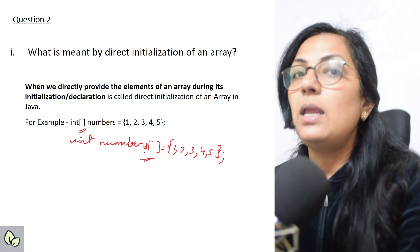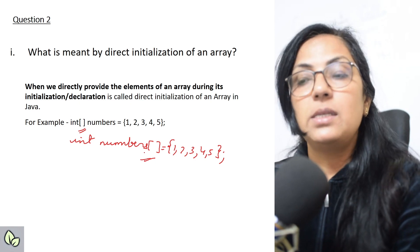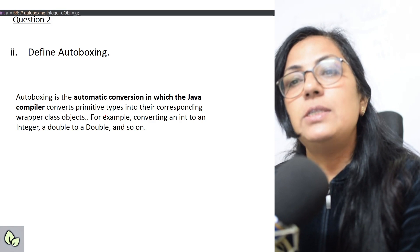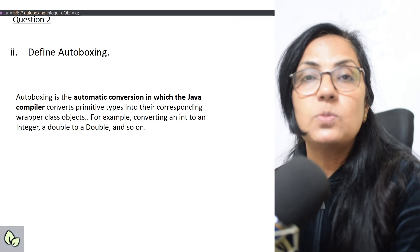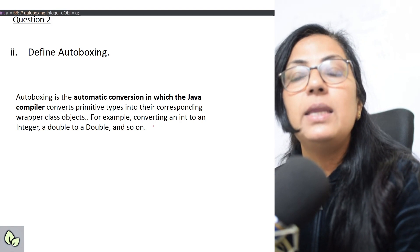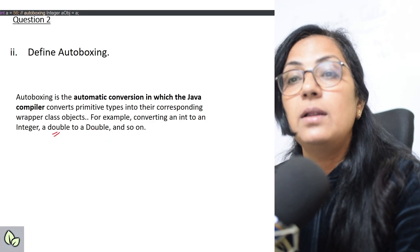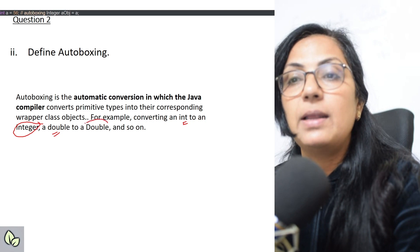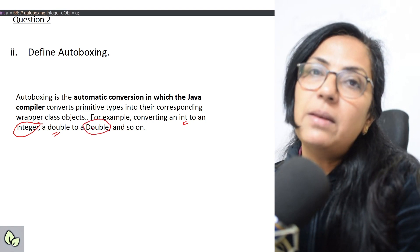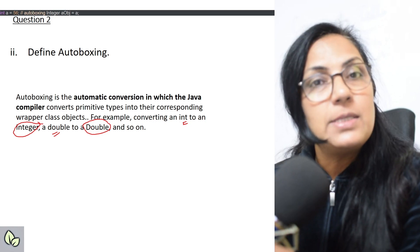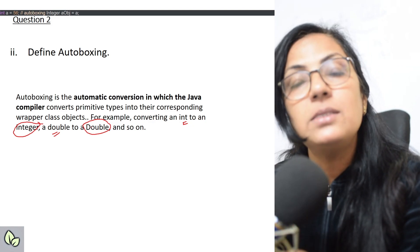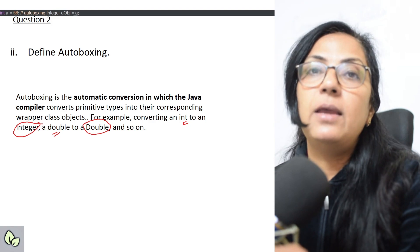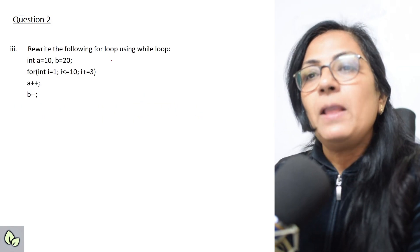Second question: define auto boxing. Auto boxing is the automatic conversion in which Java compiler converts primitive data type into its corresponding wrapper class objects. For example, converting an int to Integer, double to Double. This is data type, int is data type, this is Integer, this is the wrapper class. For auto boxing, always I tell my children, auto boxing ko kaise yad rakhoge? AP. A stands for automatic and P stands for primitive. So jo automatic primitive data type ko non-primitive mein, class objects mein convert karta hai, wo hai auto boxing.